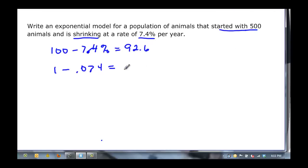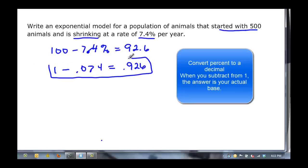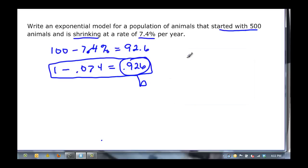So 0.926 - this would be my preferred method. It's easy to convert the percentage to a decimal, and then this is going to be my base. I start out with a = 500. So my function P(t) is going to be 500 times 0.926 to the t.